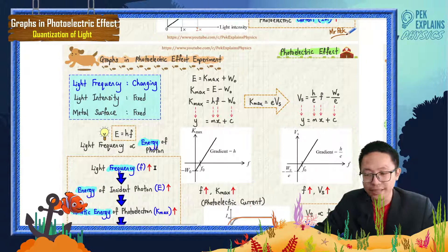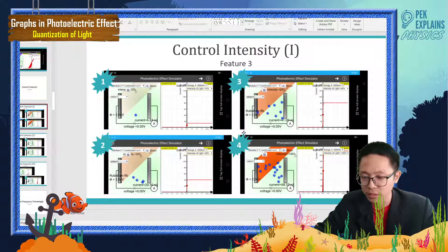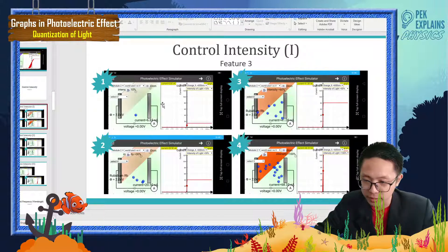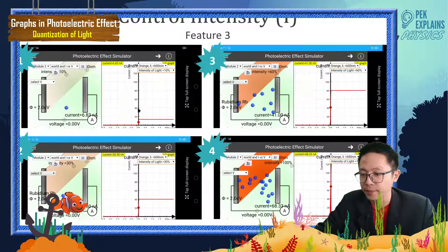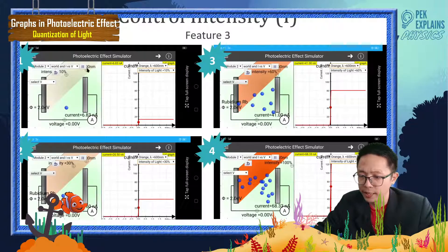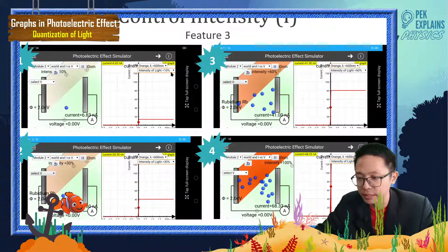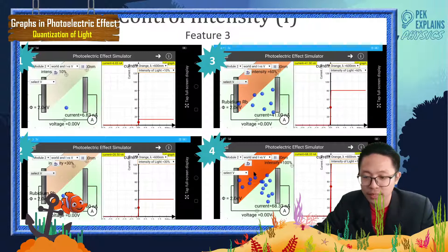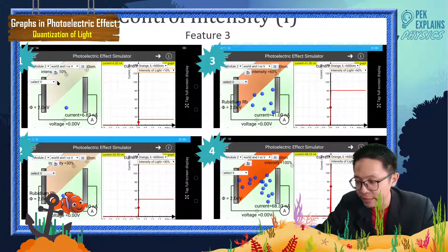I haven't finished about the intensity of light because I have this picture to show you. About the intensity. So if you look at this one, we have a dim light. This is a dim light with intensity just 10%. And this is a very bright light with intensity 100%. So you can compare the brightness and also the number of electrons ejected.